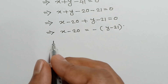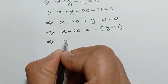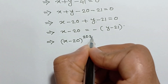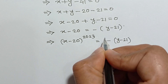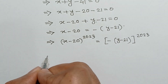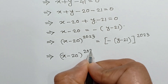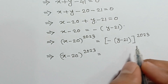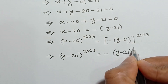Now, if we raise both sides to the power 2023, we will get (x minus 20) whole to the power 2023 is equal to negative of (y minus 21) whole to the power 2023. Since negative 1 to the power 2023 equals negative 1, it becomes negative of (y minus 21) whole to the power 2023.